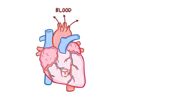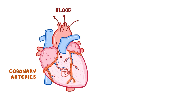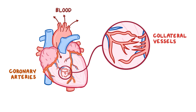The heart pumps out blood for all of our organs and tissues to use, but the heart also needs blood. So it also pumps blood to itself through the coronary arteries on the outside of the heart. Coronary arteries are linked to one another through tiny blood vessels called collateral vessels, which are normally in an inactive state, meaning blood doesn't flow through them.